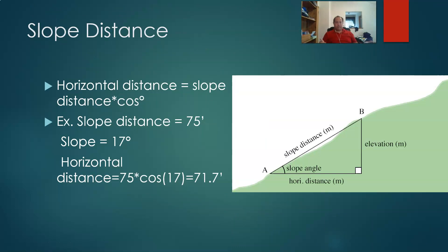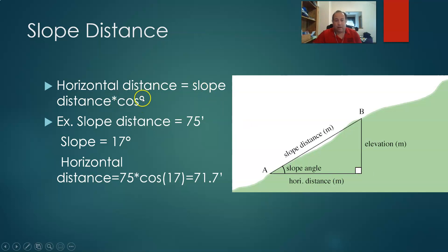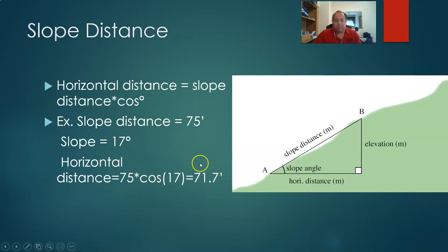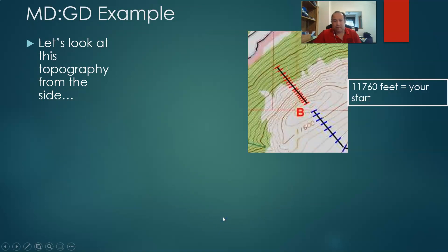We have to really understand slope distance. It's a relatively simple calculation as long as you're comfortable with your calculator. Horizontal distance, or flat distance, equals slope distance times the cosine of the degrees of slope. For example: slope distance equals 75 feet, 17-degree slope. 75 times cosine 17 means our flat distance is 71.7 feet. We can also work this the other way — from flat distance to slope distance. Let's apply it to our topographic map to be comfortable with it.